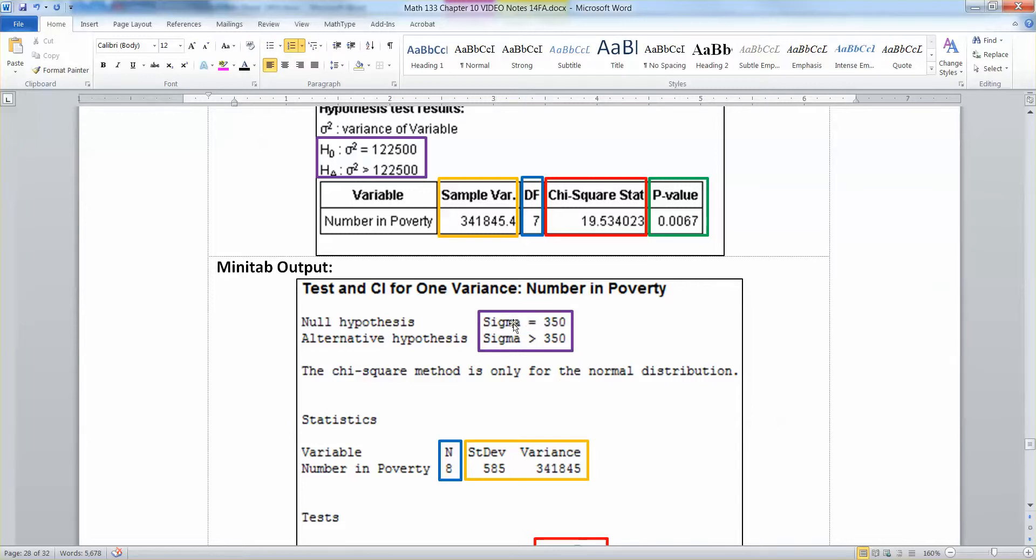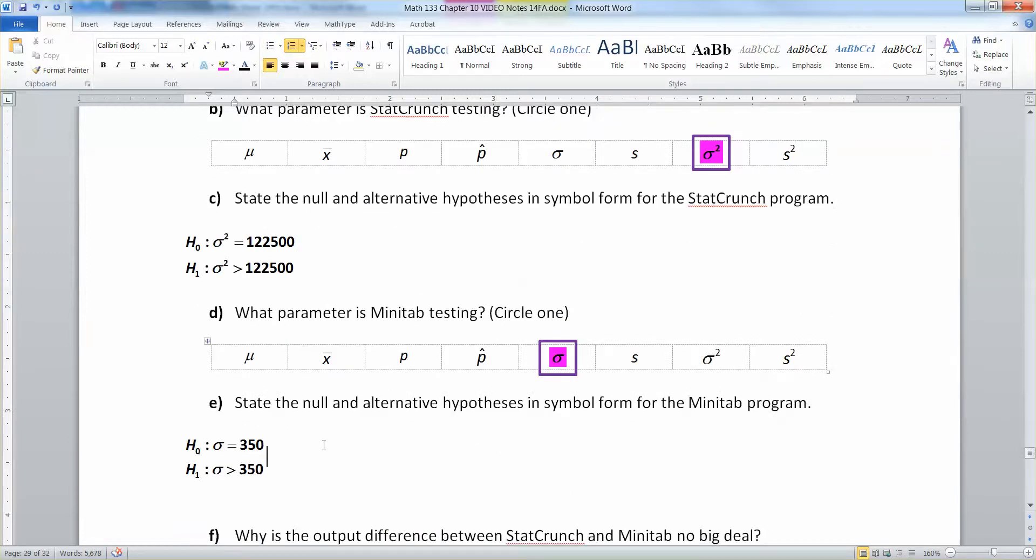Minitab, on the other hand, is actually testing sigma, and as typical with Minitab, it actually writes the Greek word out, sigma. So that's a single sigma, sigma equals 350, sigma greater than 350. So there we have it right there. Those are the null and alternative for the Minitab program.